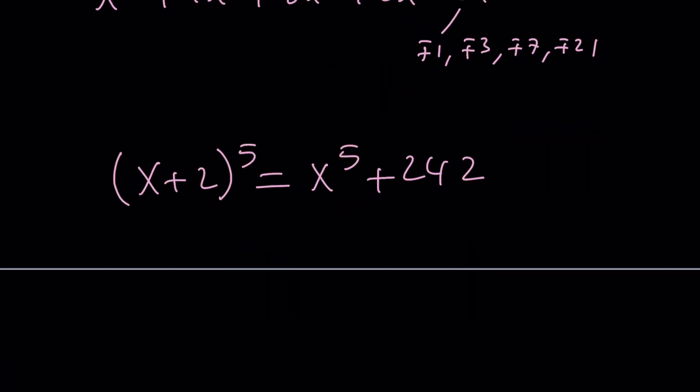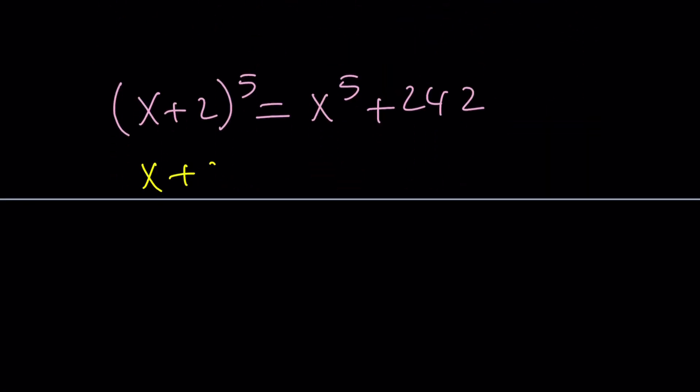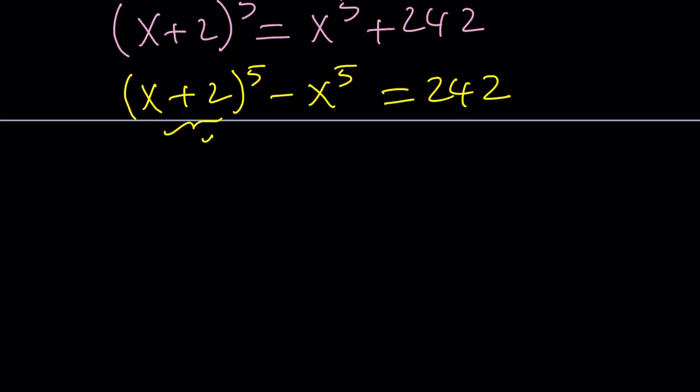So I'm going to go ahead and copy that equation one more time. Our equation is (x+2)^5 = x^5 + 242, right? Great. So first, I want to put all the x's on the same side. Again, I'm not going to use the binomial theorem here, so don't worry about that, because we already have that, right? So here's what I'm going to do, though. (x+2)^5 - x^5 = 242.